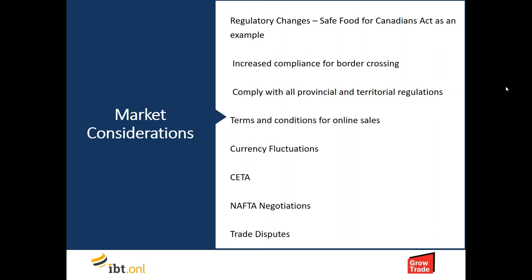Increased compliance for border crossing has been a major focus since 9/11, with ongoing work under the regulatory cooperation council to smooth the way for border crossing on both sides — increasing security while allowing known companies to get their products across more efficiently. Interestingly, it is actually easier to sell between the United States and Canada than between provinces and territories within Canada — that's an area where Canada still needs to do much more work.